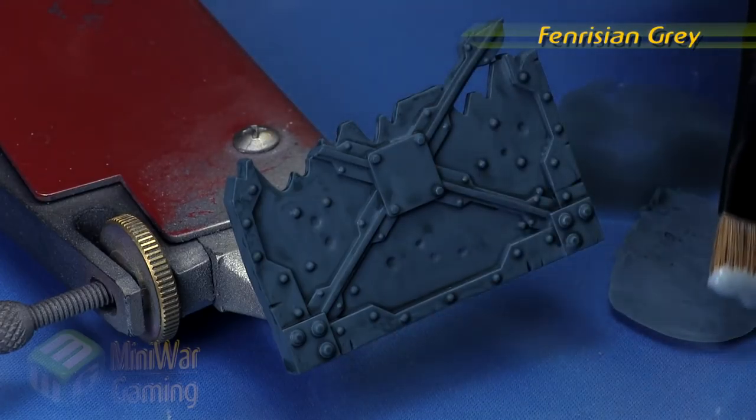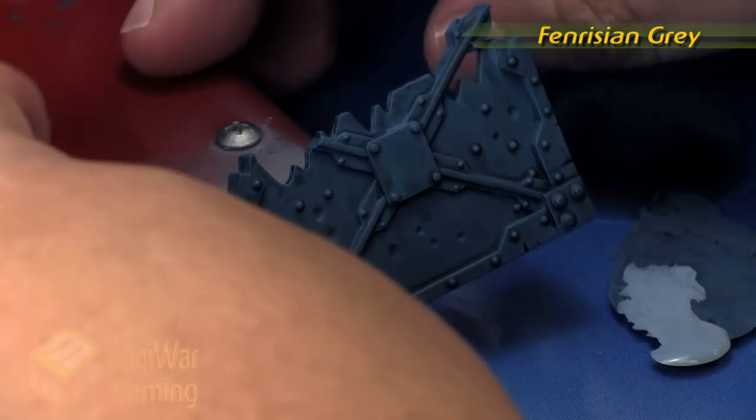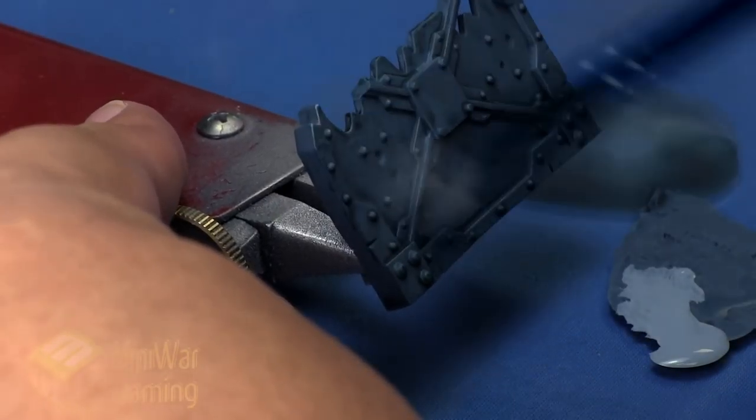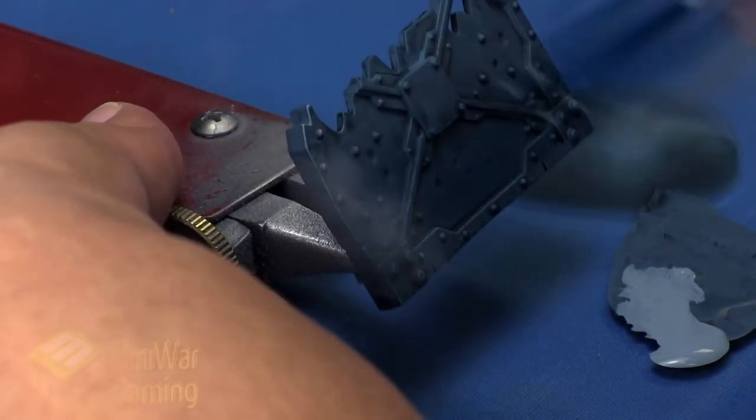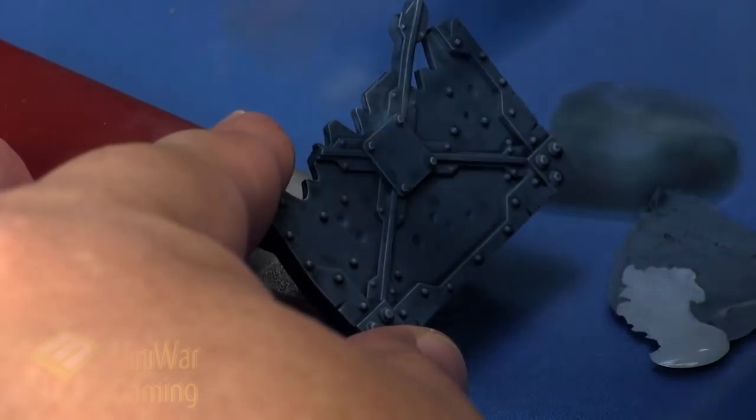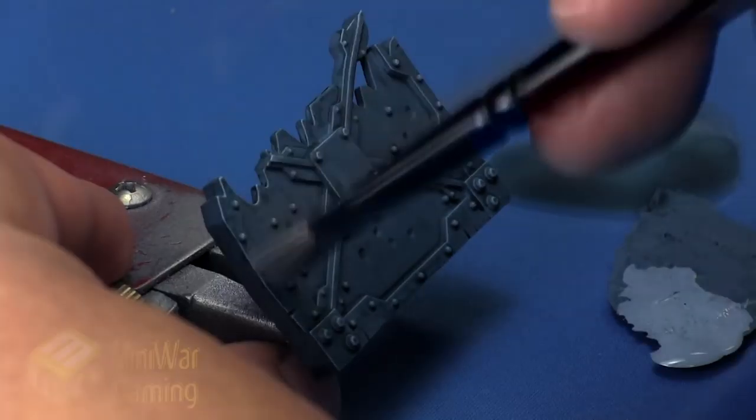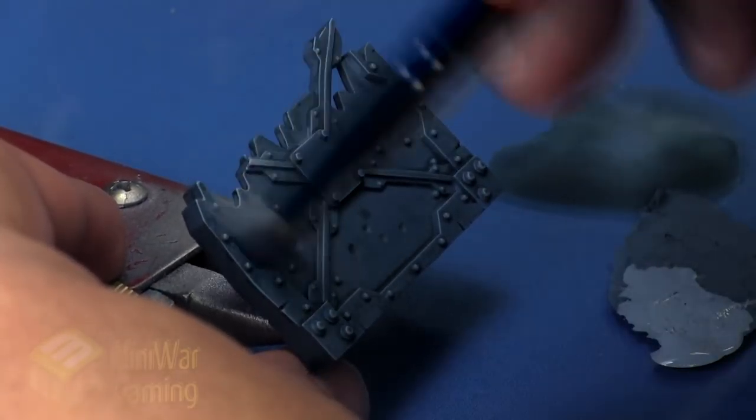We're going to dry brush this onto the surface, going against the grain of the details. A lot of the details are left and right, so I work on a slight angle to the model and that catches most of the edges.